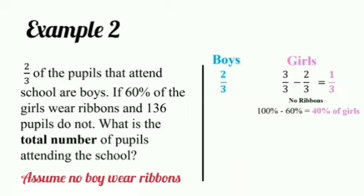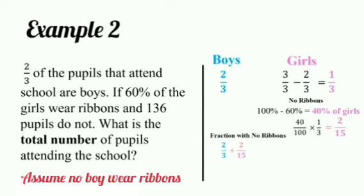Let us work with one number system. Let us find out what 40% of the girls is as a fraction. 40% of the girls is 40 over 100 multiplied by a third. This would give me two-fifteenths. This represents the part of the pupil population that does not wear ribbon. Remember, they gave us the whole number of the pupil population that does not wear ribbon. This means that the fraction representing this whole number would be all the boys plus the two-fifteenths.